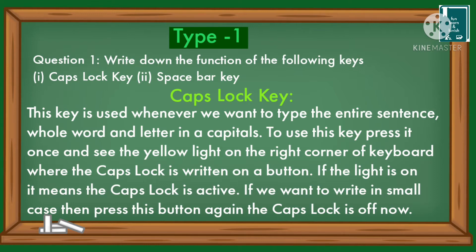Caps Lock key: This key is used whenever we want to type an entire sentence or whole word in capitals. To use this key, press it once and see the yellow light on the right corner of the keyboard where 'Caps Lock' is written. If the light is on, it means the Caps Lock is active.